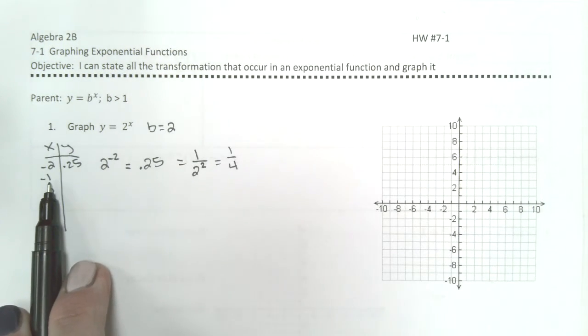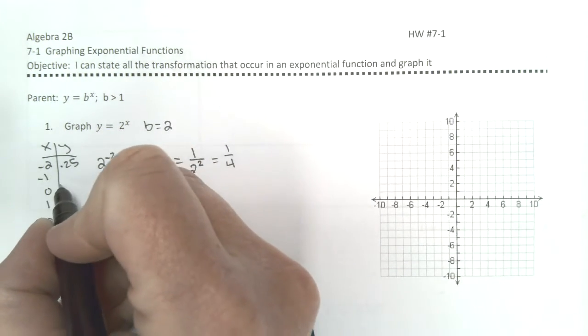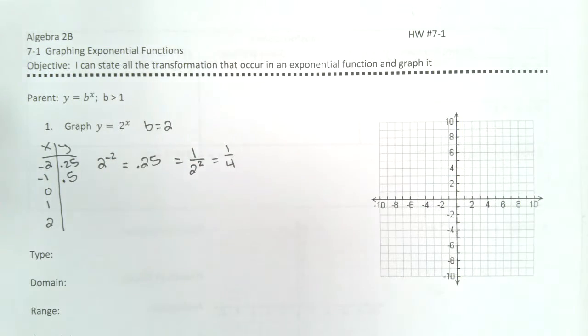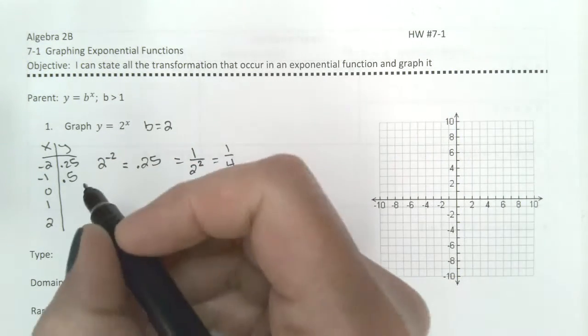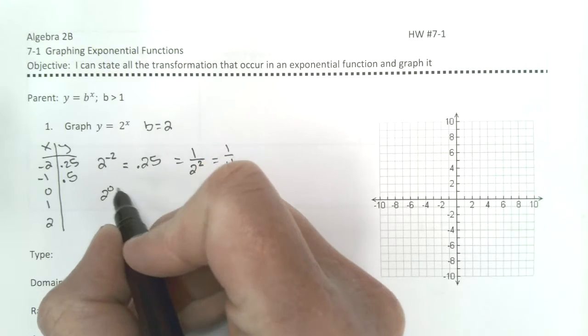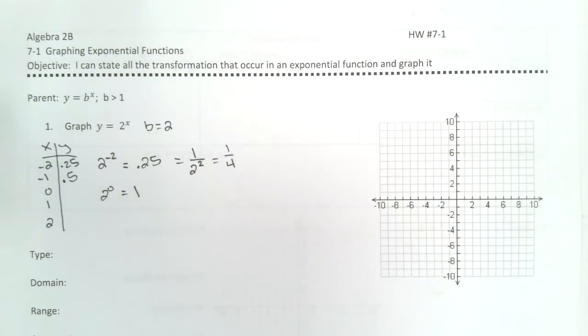If you put 2 to the negative 1 in your calculator, that will tell you that it's a half or 0.5. Here's what you do need to know. 2 to the 0 power equals 1. Anything to the 0 power is always 1.